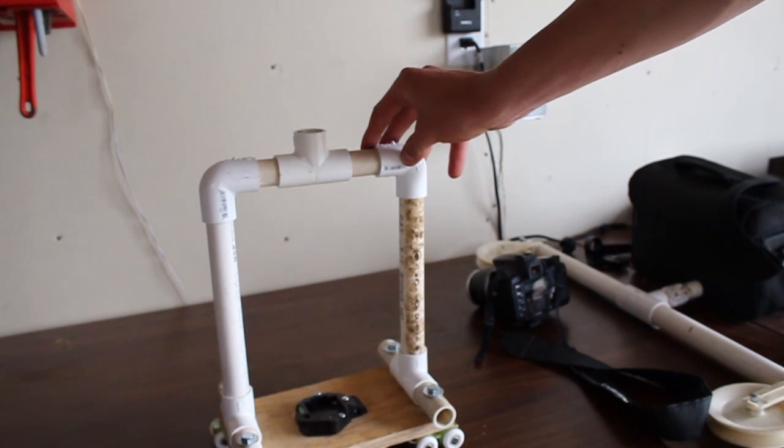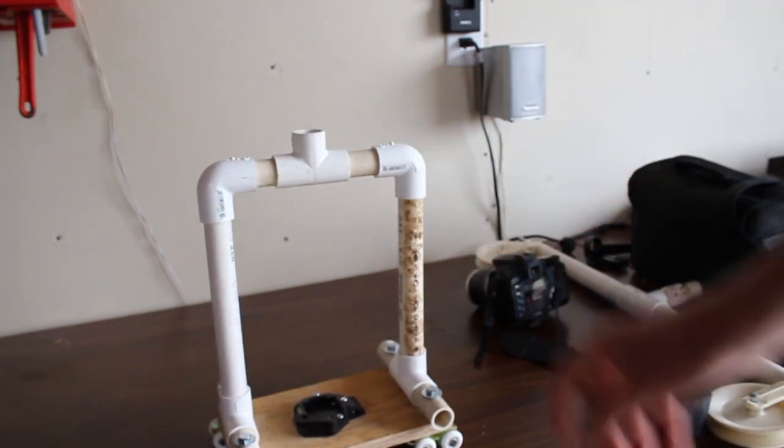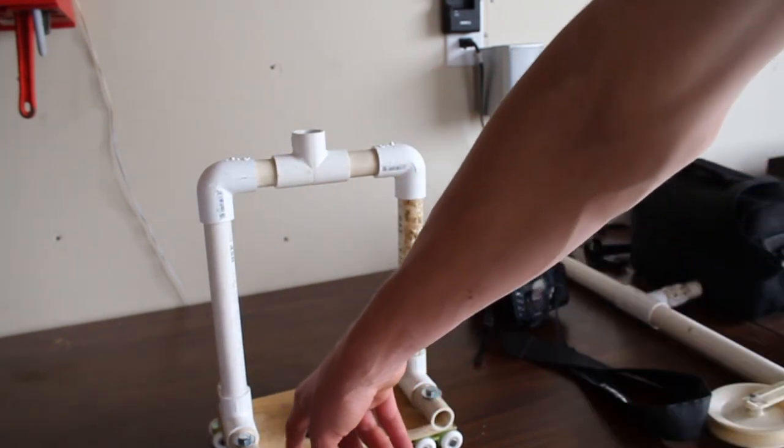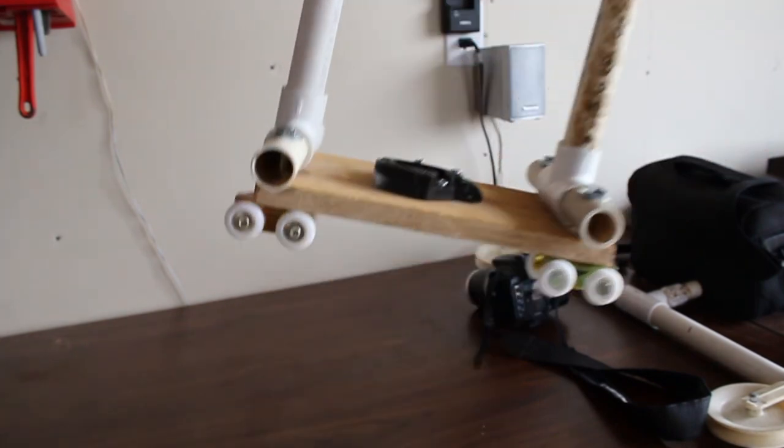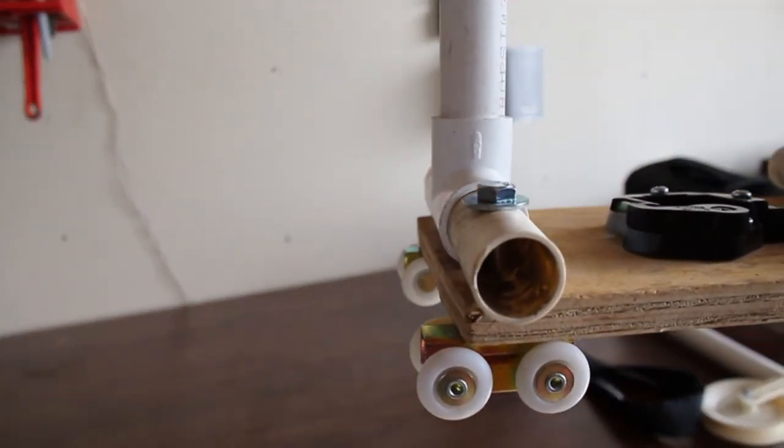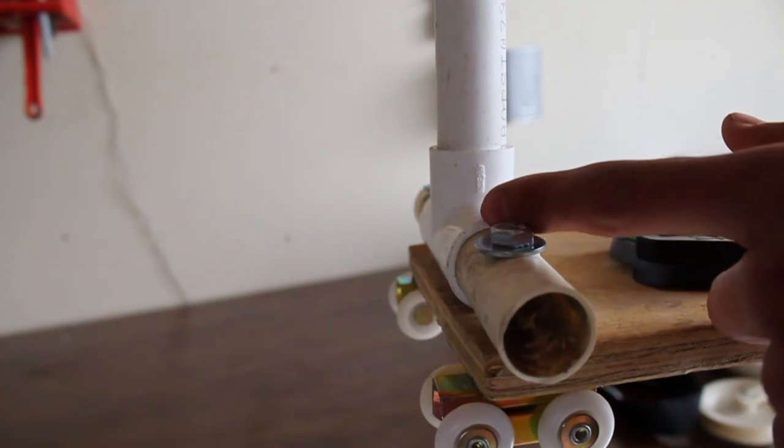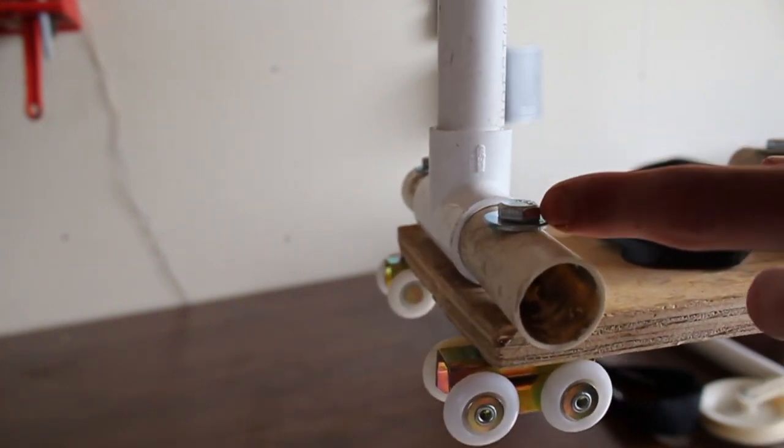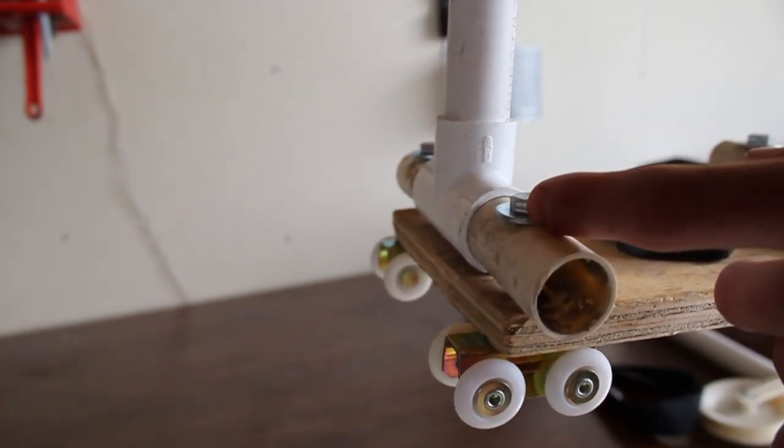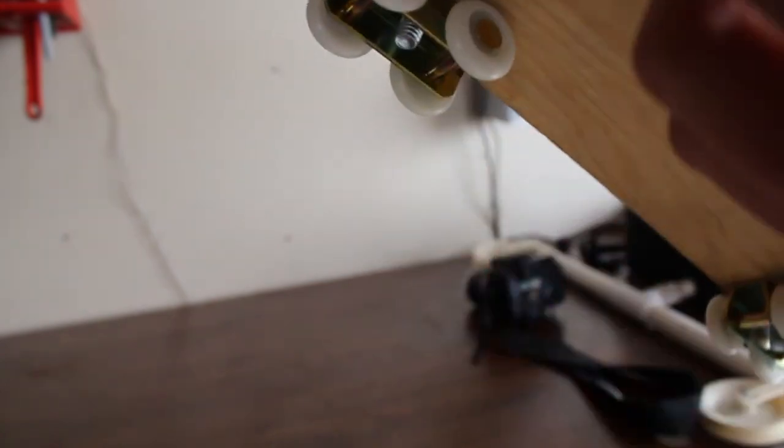And then I've got just PVC pipes slide on and then drilled some holes through the board. So I've drilled the holes directly through here, put a washer over top of the PVC and a bolt through, and then they screw directly into these wheel pieces.